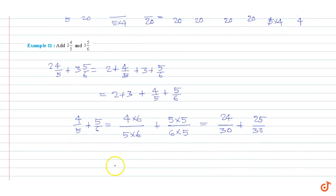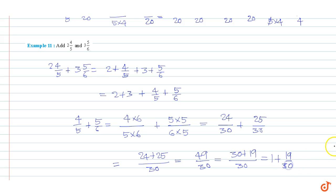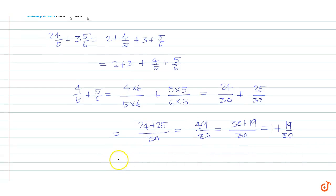This equals 24 plus 25 divided by 30, equal to 49/30, which equals 30 plus 19 divided by 30, which equals 1 plus 19/30, that is 1¹⁹⁄₃₀.